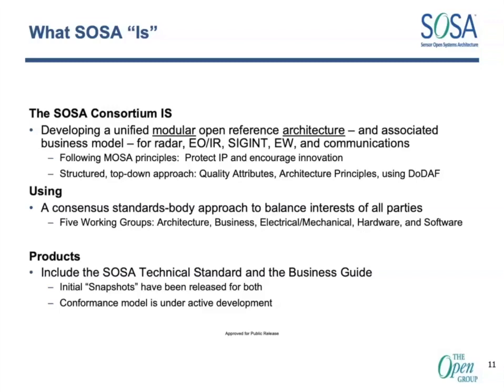What we are using is a consensus standards body approach — a group of individuals working together harmoniously to create this effort, what we're calling SOSA. What you see written there are five working groups, amended through a restructuring process that have subcommittees and technical working groups, something very similar to what FACE is right now. They cover all aspects: architecture, business, electromechanical — the parts external to a chassis such as connections — and hardware, which is anything inside a chassis and all associated software. From a product point of view, we are creating a technical standard and business guides, and also creating documents as part of the conformance program. We've created what we're calling snapshots — literally where the document is in time — for people in and outside of the consortium to understand where we are in the process of coming to technical standard version 1.